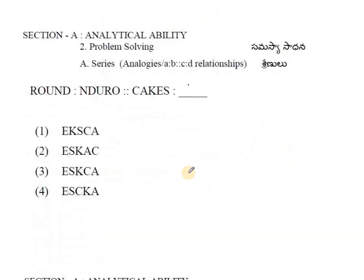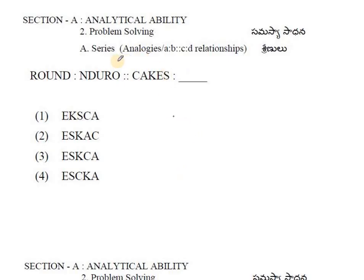Next question: ROUND becomes NDURO, then what should CAKES become? These are analytical questions. In ROUND, if you see carefully, RO and ND positions have been interchanged. ND is replaced with RO and RO is replaced with ND, while U remains in the same place.